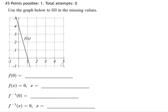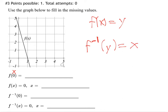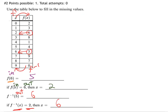Now the same thing on a graph. F of 0 — that's an x value of 0. Regular functions: plug in x, get out y. Inverse functions: it reverses — you plug in y and get back x. That's the main idea. For inverse functions, y values came first.